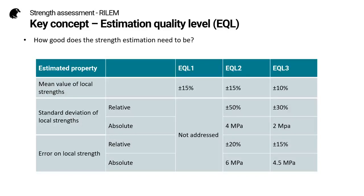The first key concept is the estimation quality level — in other words, how good does the strength estimation need to be. There are three levels, from the lowest EQL1 to the highest EQL3. We define maximum errors allowed for the estimation of the mean strength for a test region, and a maximum error on the strength estimation at any particular location.